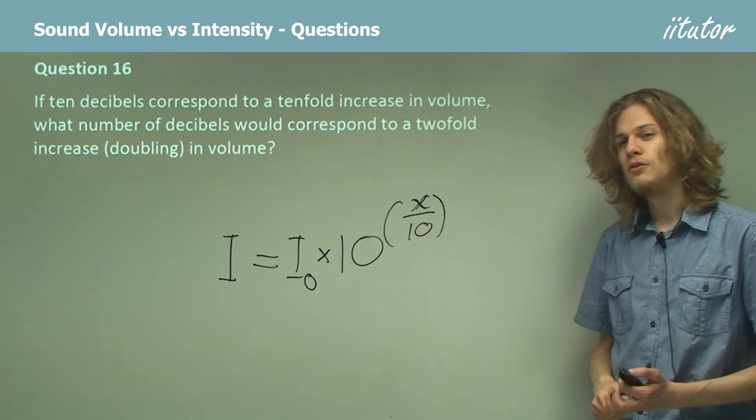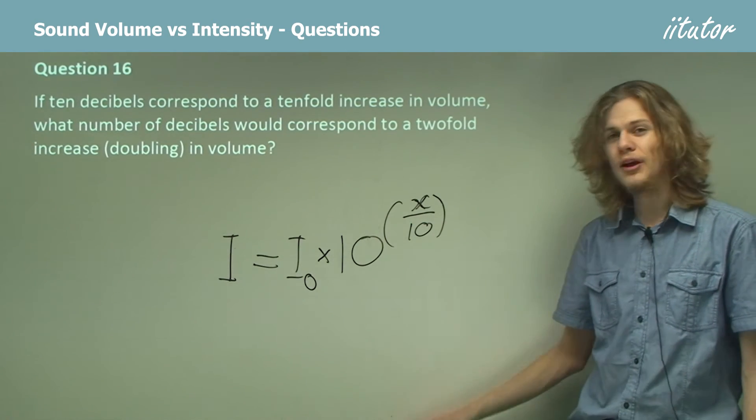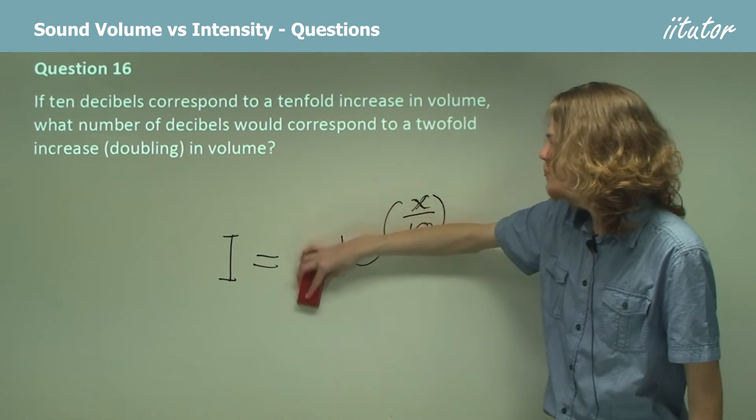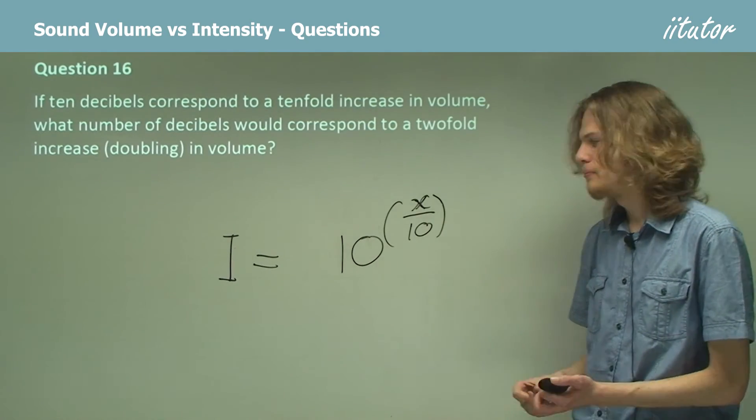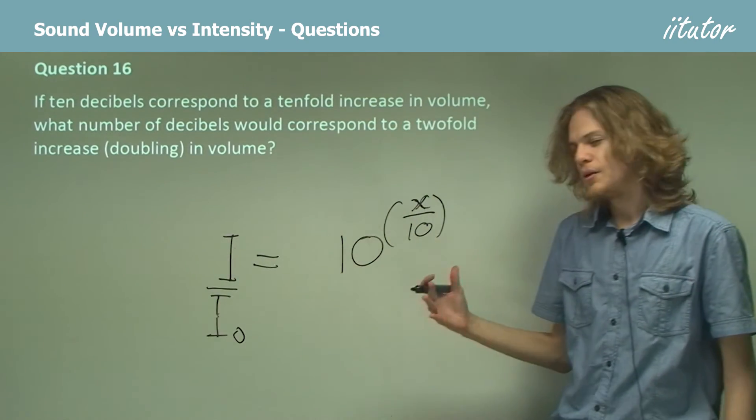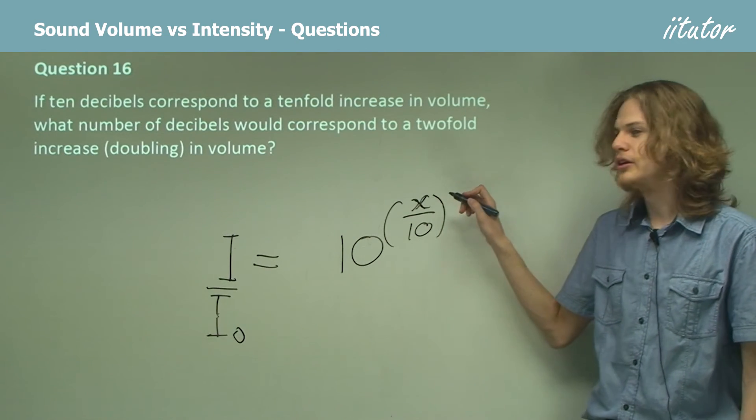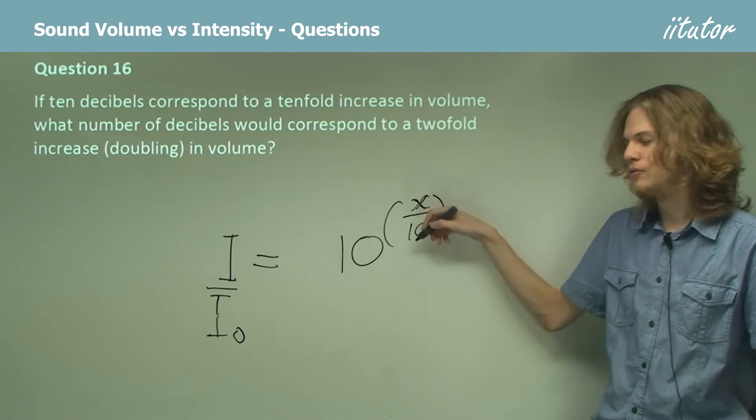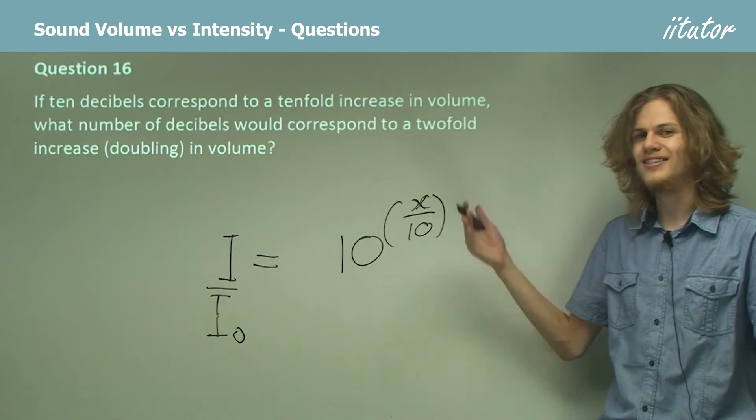Now if we want to find an increase of a factor of 10 or by a factor of 2, then we should divide both sides by that I0. So that means that if this is a factor of 10, then we need this whole thing to be 1. So x over 10 needs to be 1, so x is 10.